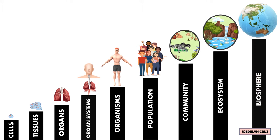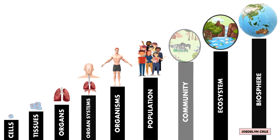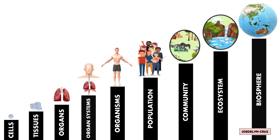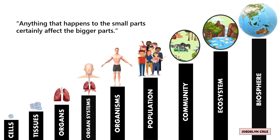Again, the levels of biological organization from the lowest to highest are Cells, tissues, organs, organ systems, organisms, population, community, ecosystem, and biosphere. Anything that happens to the small parts certainly affects the bigger parts.